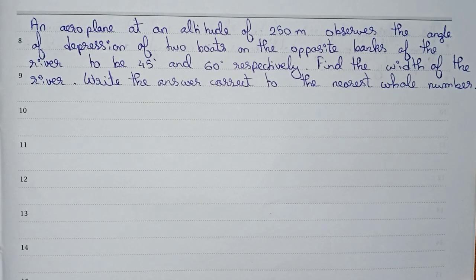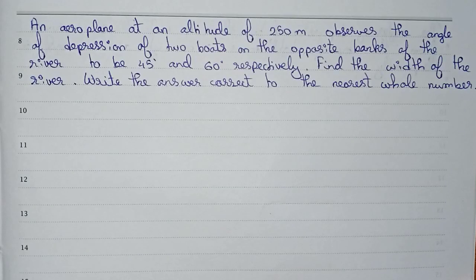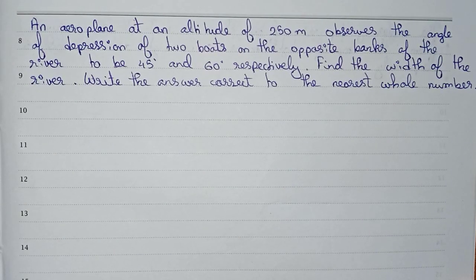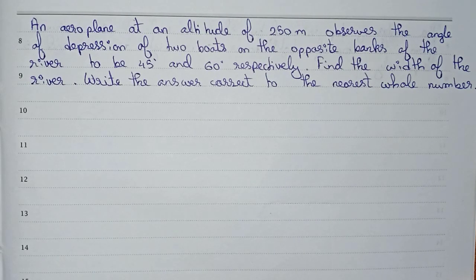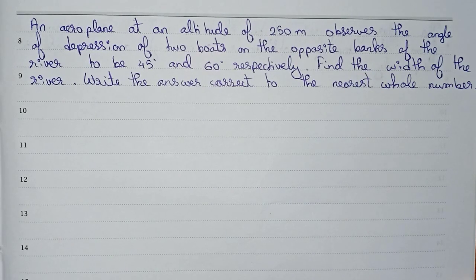Hello guys, welcome to this video. In this video, our question is: an aeroplane at a height of 250 meters observes the angle of depression of two boats on the opposite banks of a river to be 45 degrees and 60 degrees respectively. Find the width of the river. Write the answer correct to the nearest whole number.